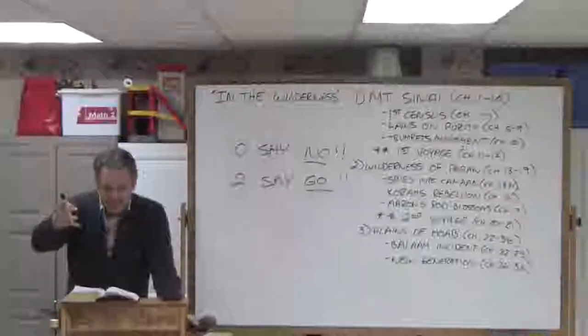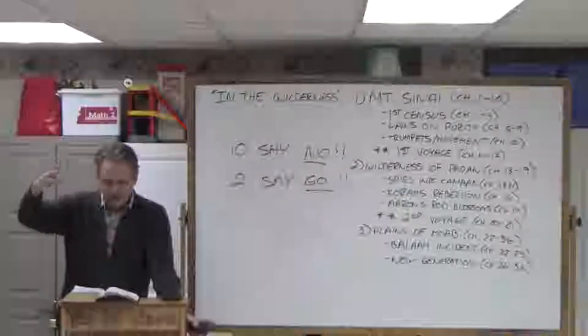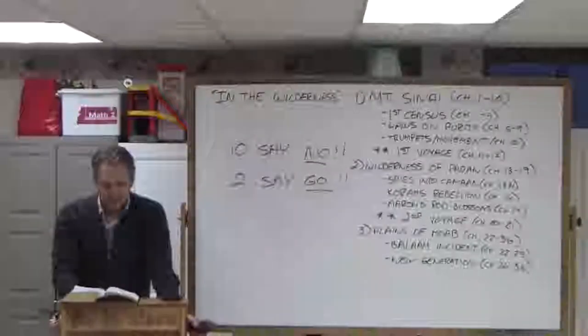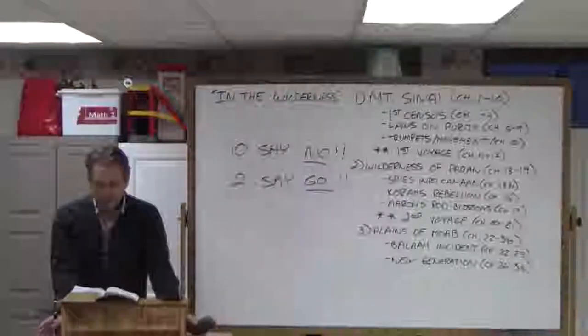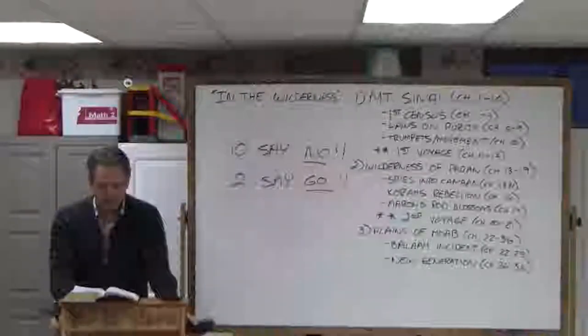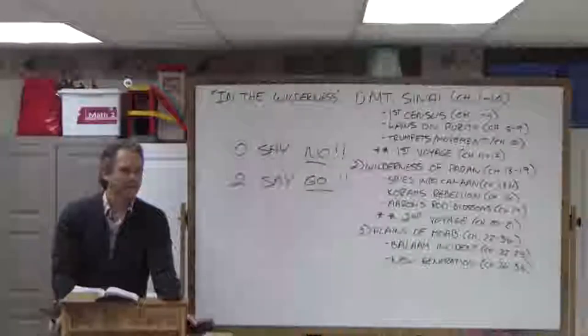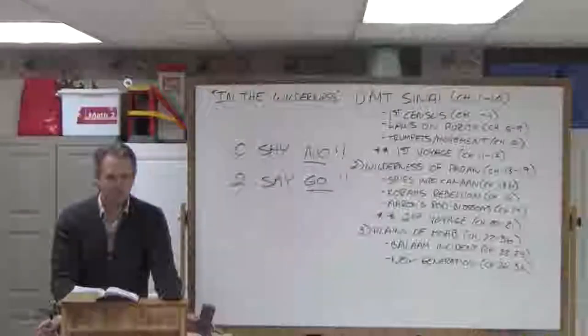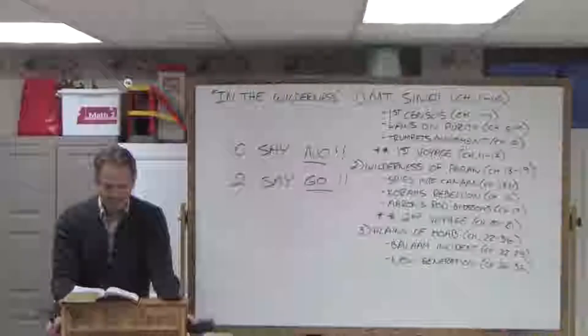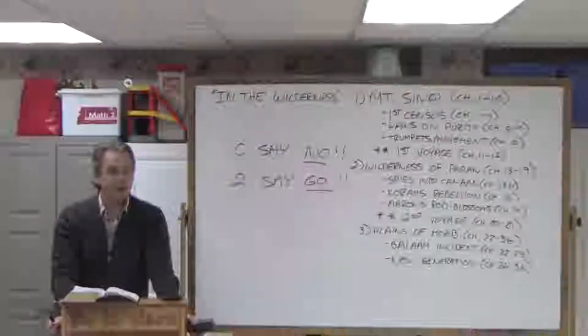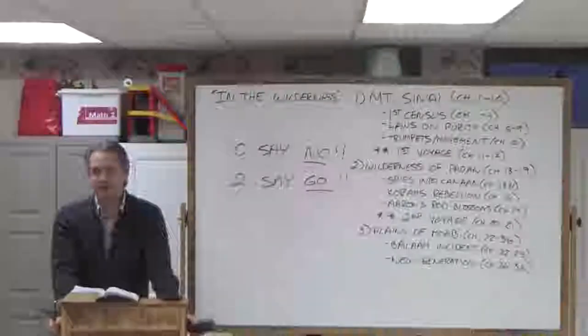Moses begs the 10 not to rebel because they're getting angry again. They don't want to go in and have to fight these people that look intimidating. When Moses stands up to them, the group gets together and says, let's stone Moses, Aaron, Joshua, and Caleb. God gets angry and the 10 that said no die of a plague. So God shows where his favor is.